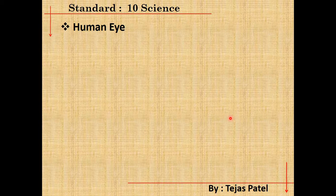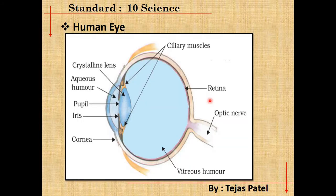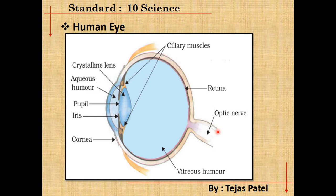Now we are going to see how the human eye is made. As you can see in the figure, the outermost part is the cornea, on which light rays first fall. Then we have the pupil, the iris, and the crystalline lens. Next are the aqueous humour and vitreous humour. Behind the lens is the retina, where the image is formed, and finally the optic nerve, which connects to our brain for identifying different objects.